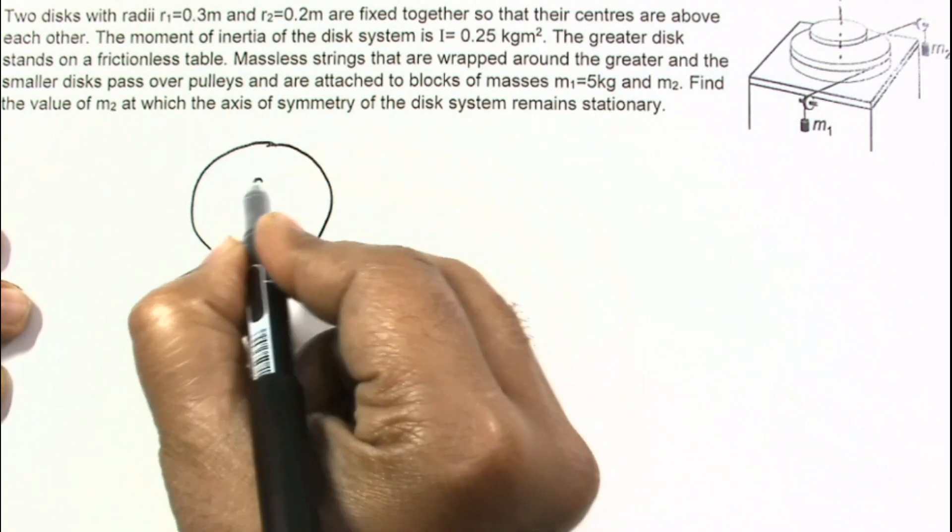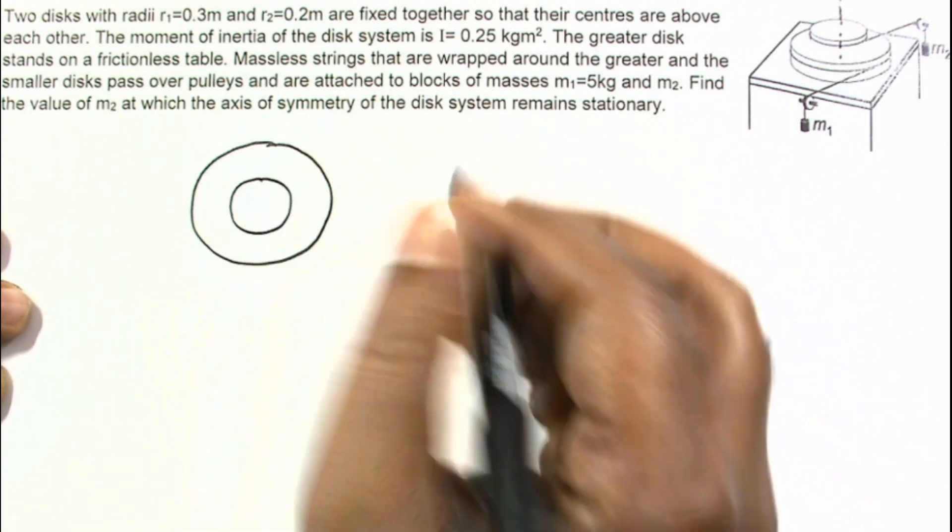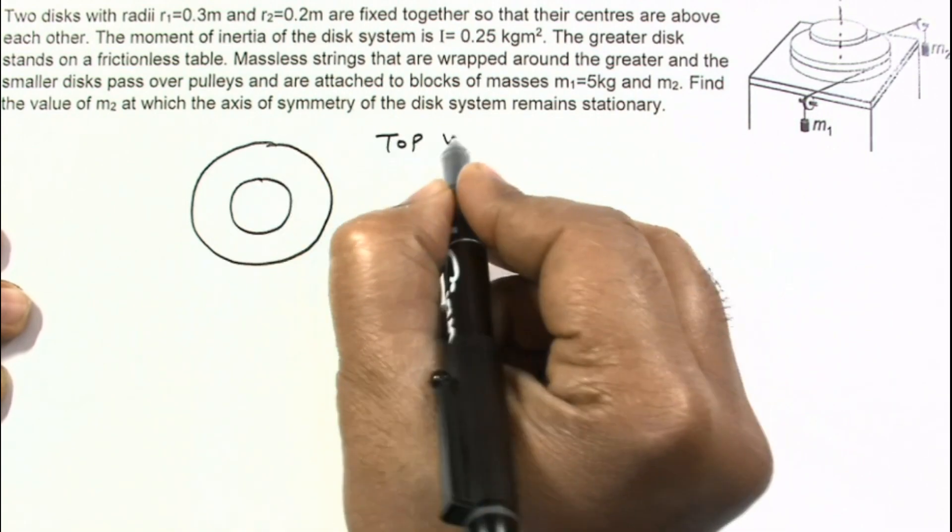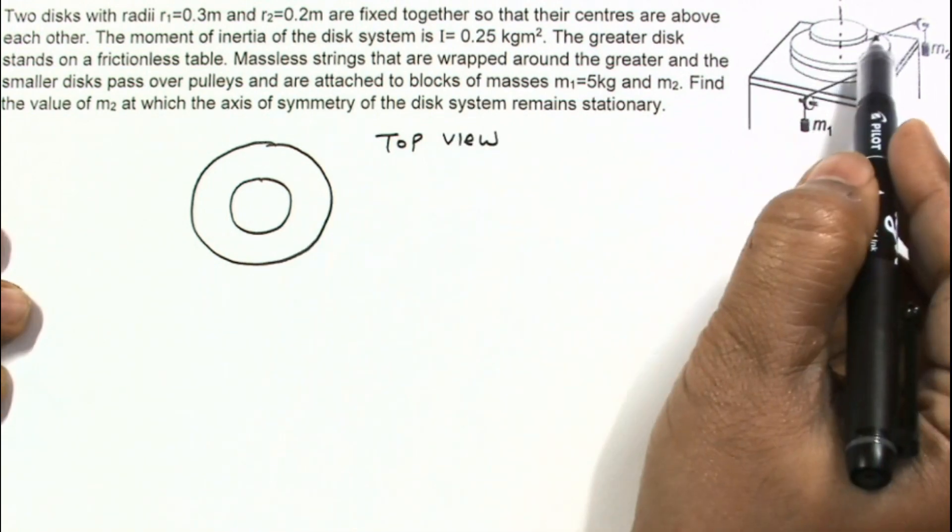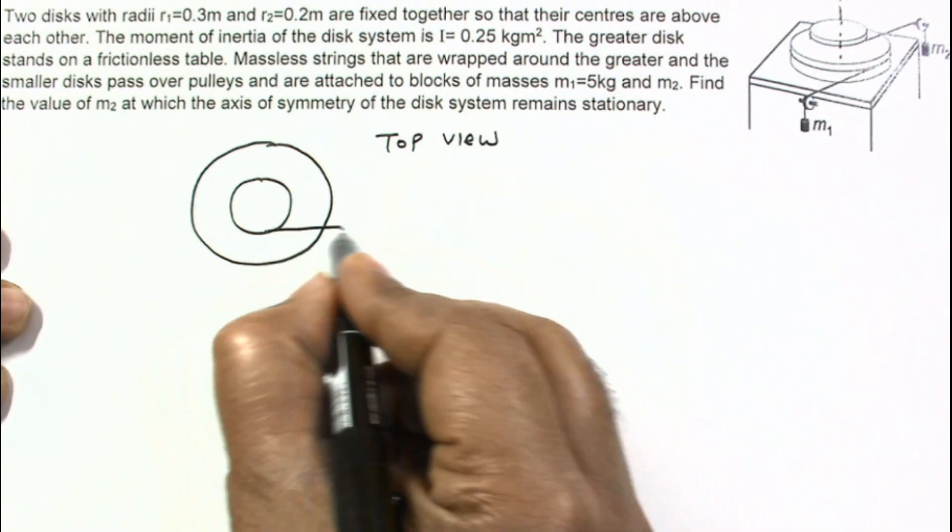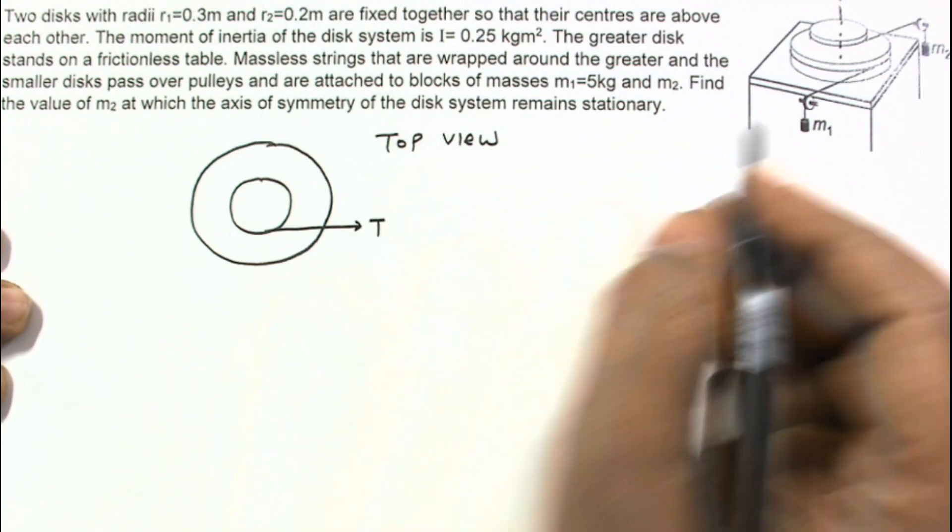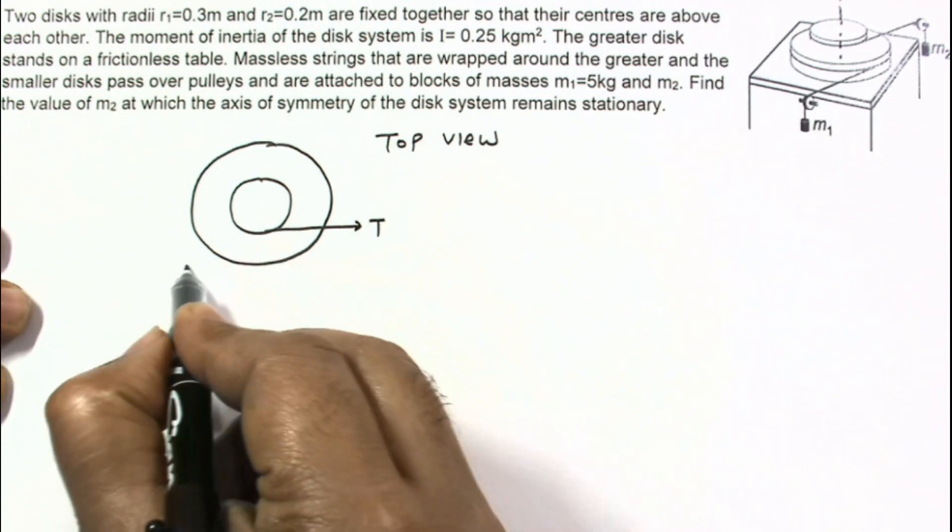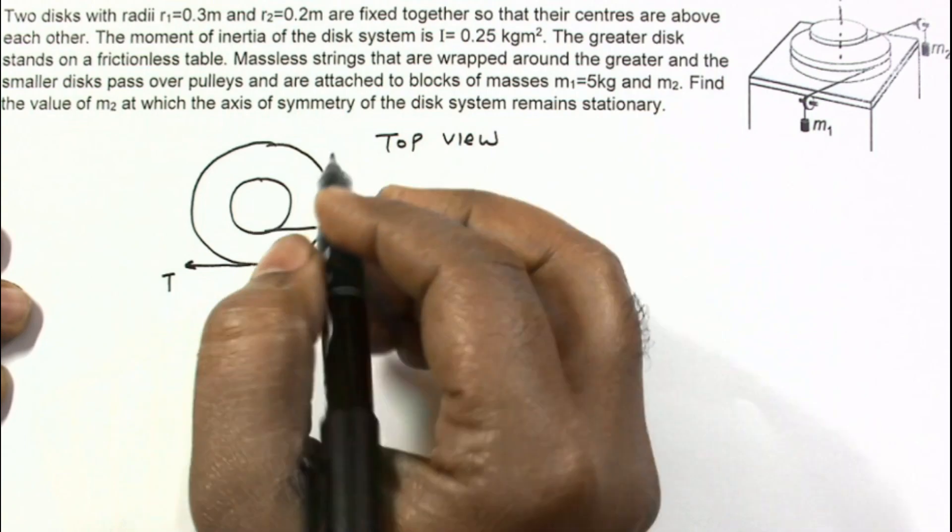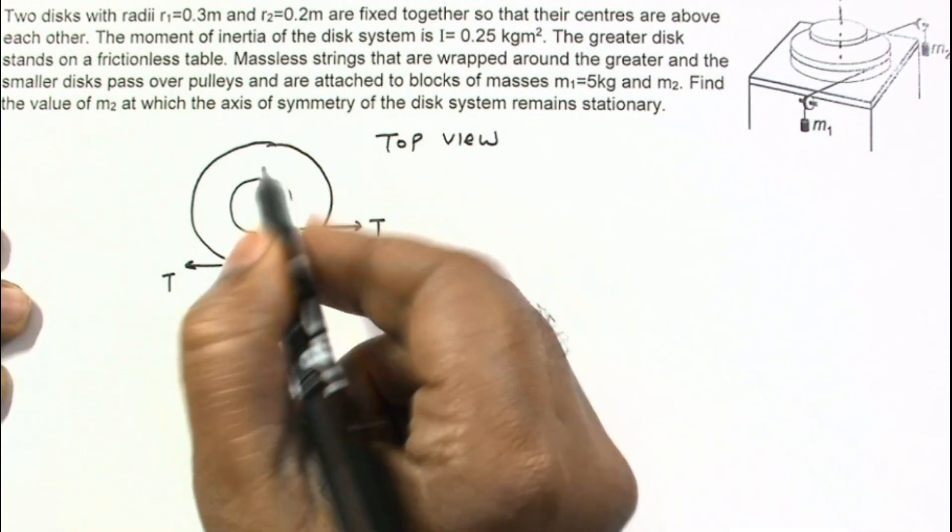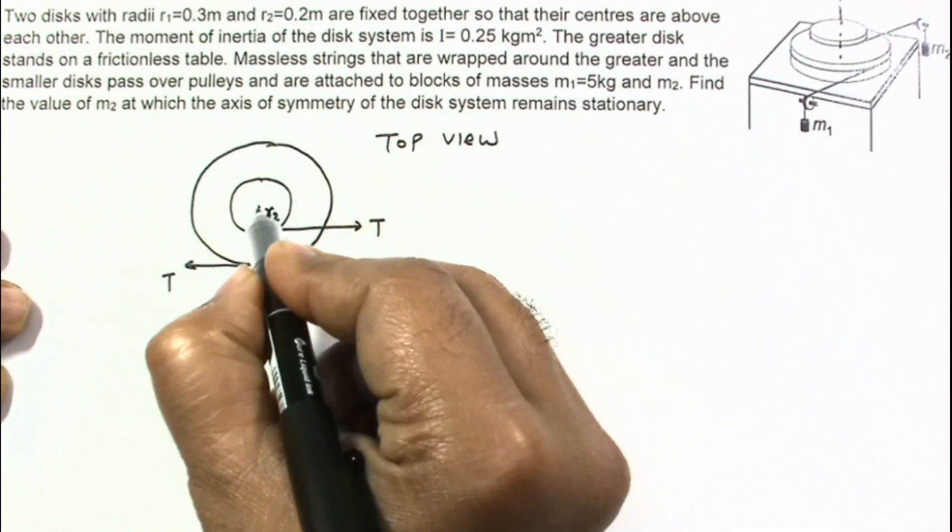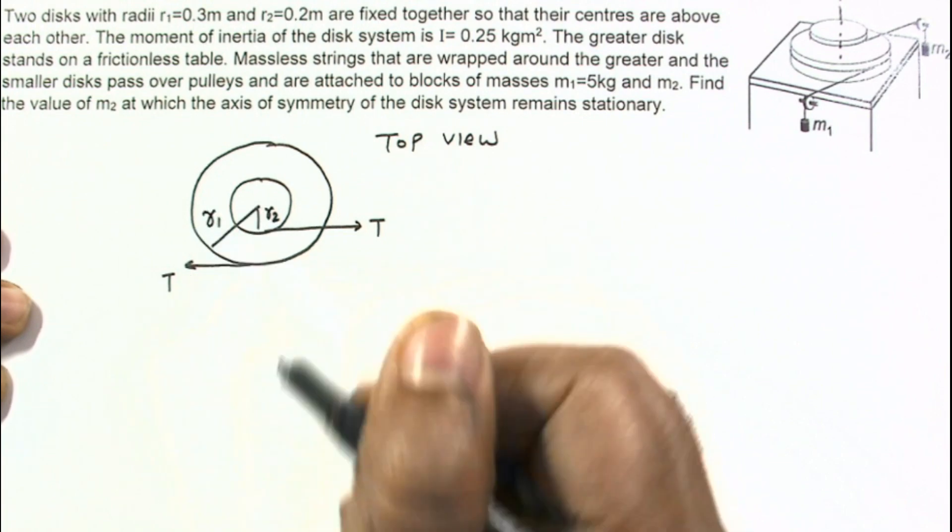So this is the top view of the disc system. In this top view, tension in this string is like this and tension in this string will be like this. The smaller radius is R2 and this larger radius is equal to R1.